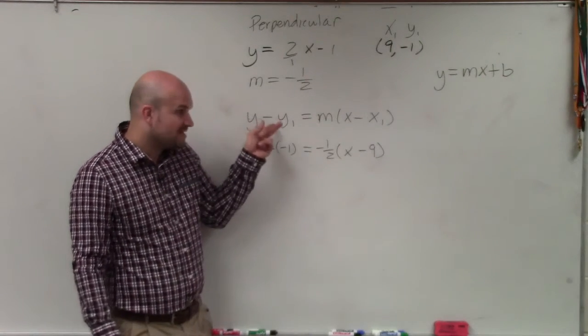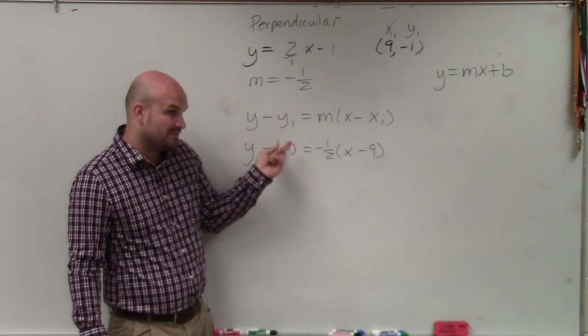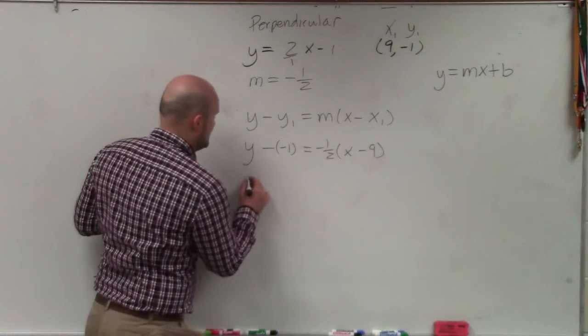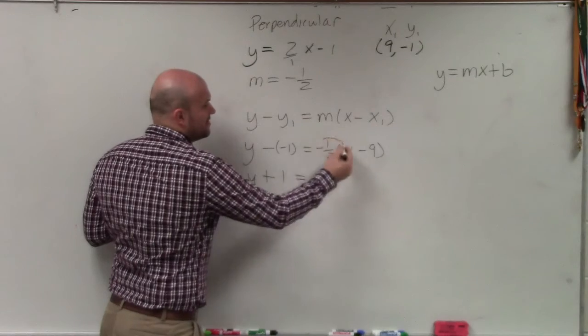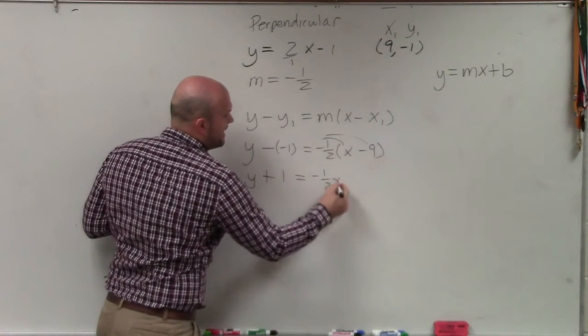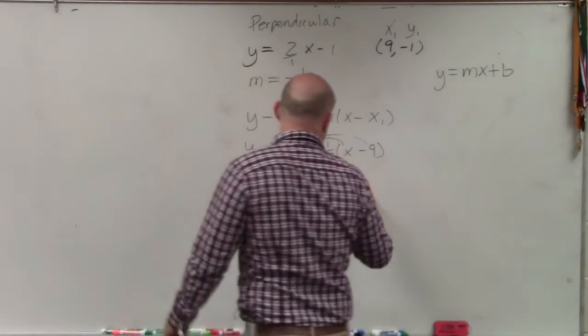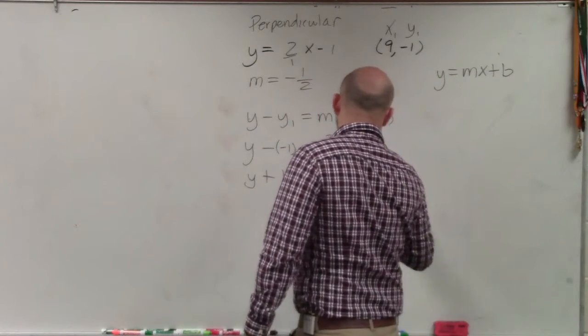Please make sure, guys, when it's minus, since that y1's negative, I put it in parentheses. That reminds me that that's really plus. And then here, I'm going to apply distributive property. So I have negative 1 half x. And then this becomes positive 9 halves.